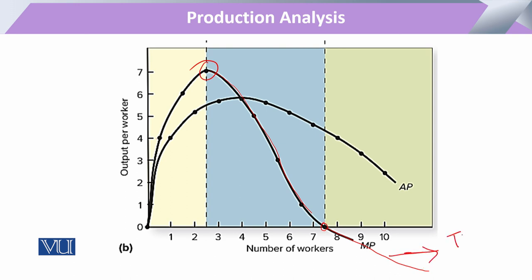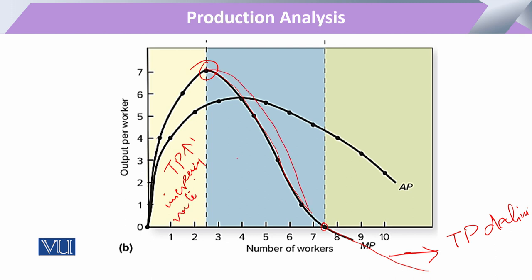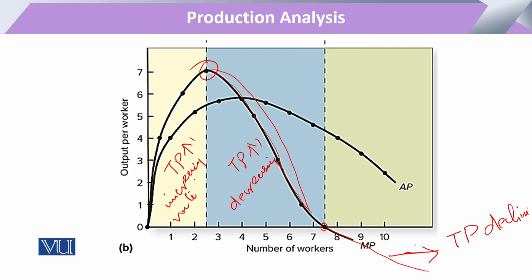In general, the first phase is where total production is increasing at an increasing rate. Then comes a second phase where the rate of increase slows and becomes stagnant. The third phase is when total production is decreasing. So this law of diminishing marginal physical productivity helps the entrepreneur to decide about the production stages.